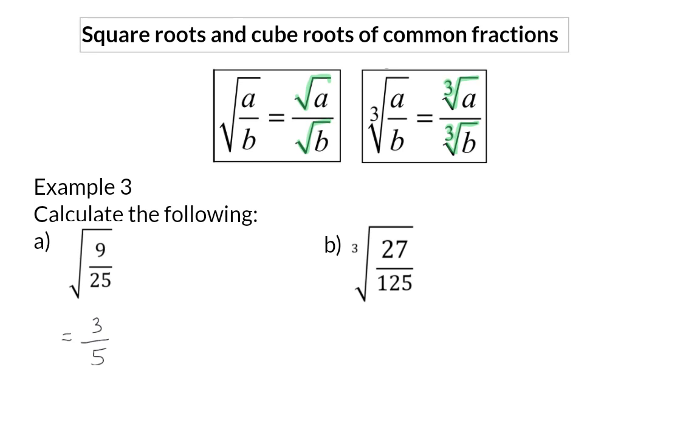In B, we need to determine a cube root. The cube root of 27 is 3 and the cube root of 125 is 5.